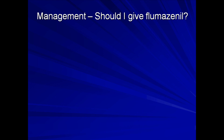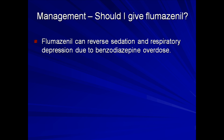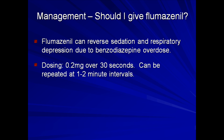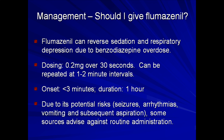One question that frequently comes up is whether the comatose patient should receive flumazenil. Flumazenil can reverse sedation and respiratory depression due to benzodiazepine overdose. The dosing is 0.2 mg given IV over 30 seconds, and it can be repeated at intervals of 1 to 2 minutes. The onset of action is under 3 minutes and its duration is about 1 hour. Unfortunately, due to its potential risks such as seizures, arrhythmias, and vomiting with subsequent aspiration, some sources advise against routine administration. These side effects, particularly seizures, are thought to most likely occur in patients on chronic benzodiazepines.